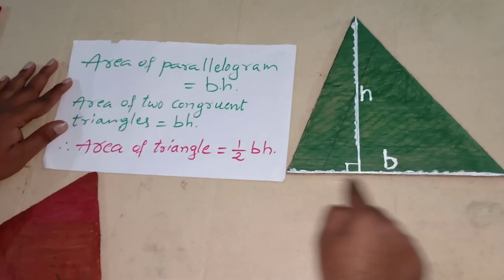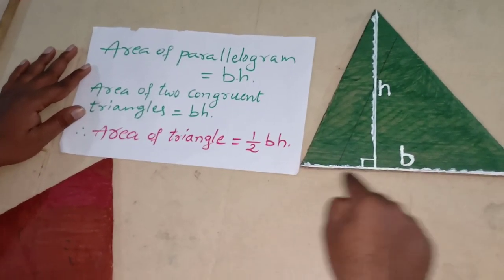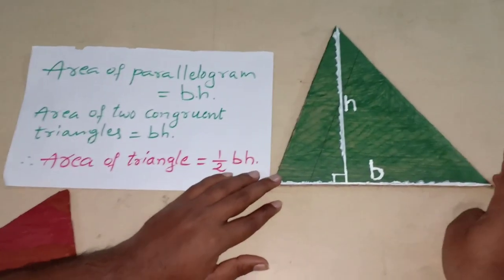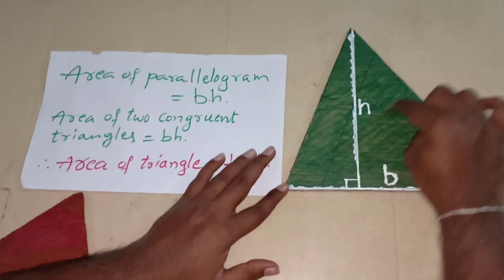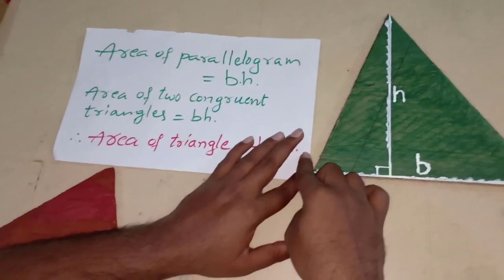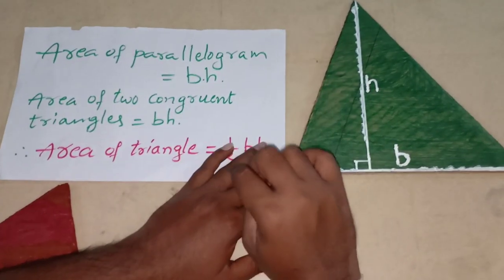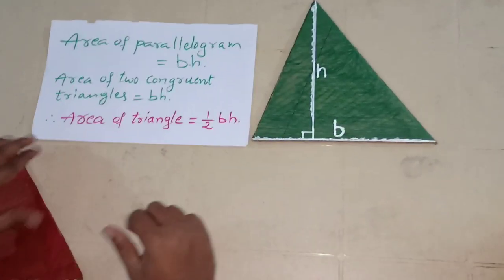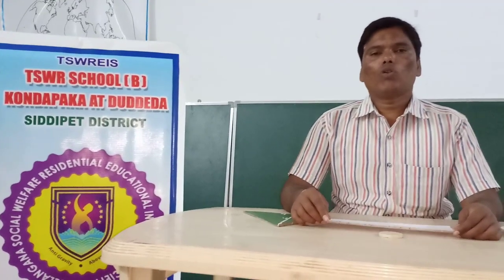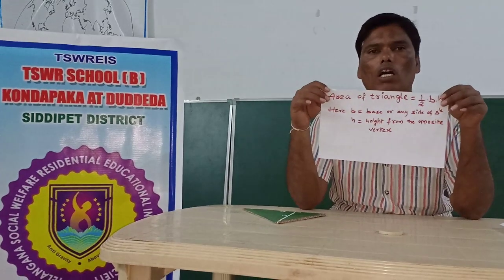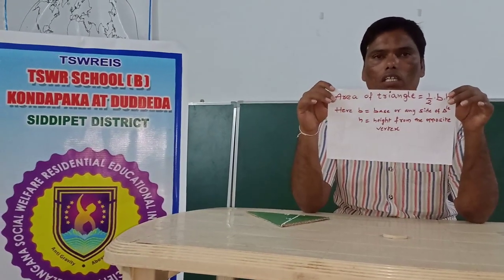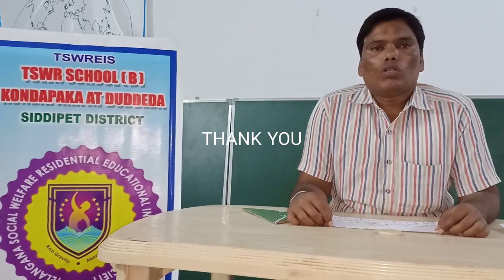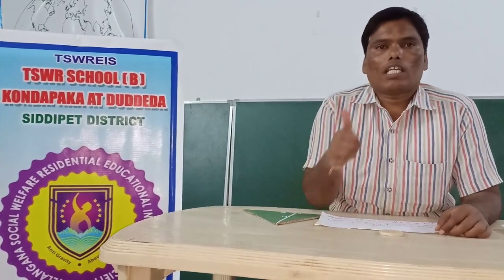Here B is the base of the triangle and H is the height of the triangle. We can choose any side as the base — if we choose this side as the base, we draw the perpendicular from its opposite vertex. So the area of triangle formula is equal to half into base into height. I hope you like my video. Thanks for watching — don't forget to subscribe. Thank you very much.